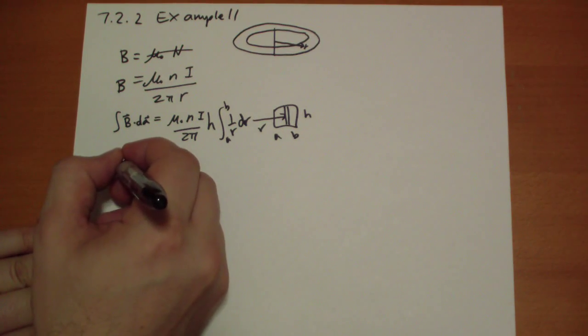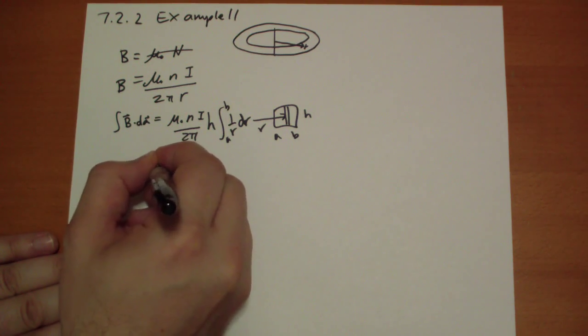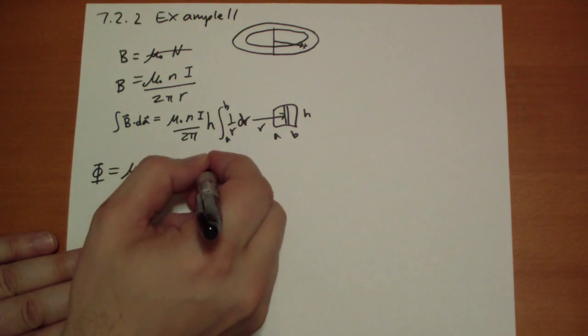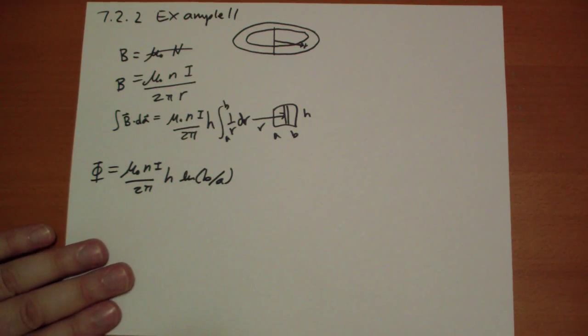Solving for that is rather easy. So the flux is mu naught n i over 2 pi h log of b minus a, log of b minus log of a.